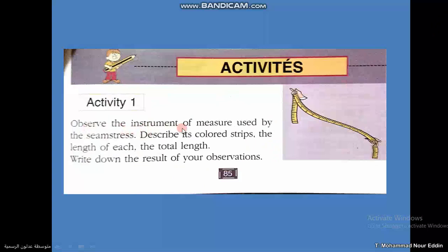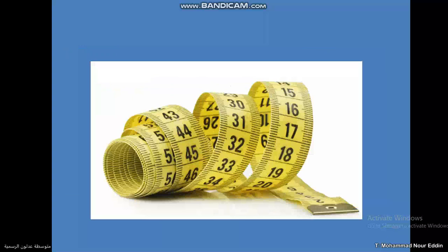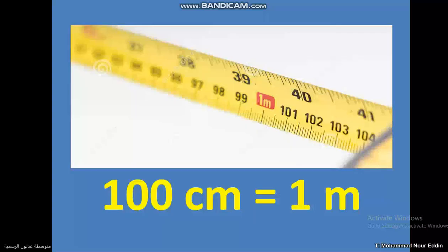Activity one: observe the instrument of measure used by the seamstress. Describe its colored strips — the length of each strip, the total length — and write down your observations. We're going to see the set of units on this instrument. We notice the centimeters, and after 99 it reaches 100, which is labeled 1 M — meaning one meter.